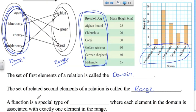A function is a special type of relation where each element in the domain is associated with exactly one — and only one — element in the range.